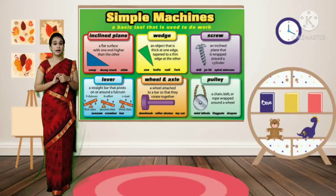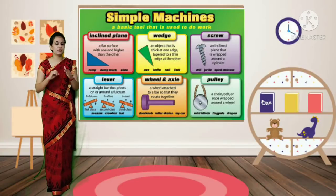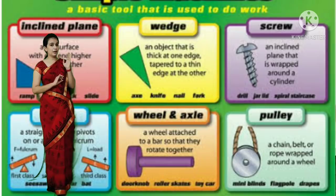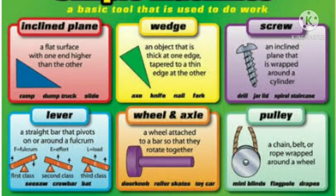There are six simple machines: inclined plane, wedge, screw, lever, wheel and axle, and pulley.